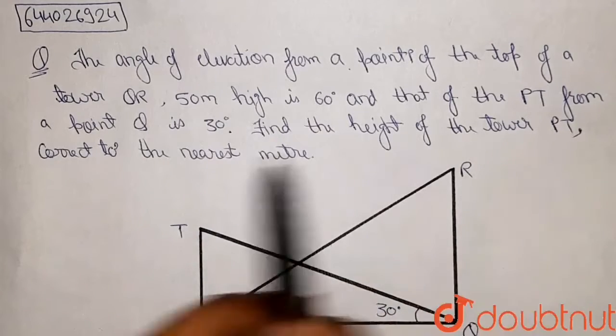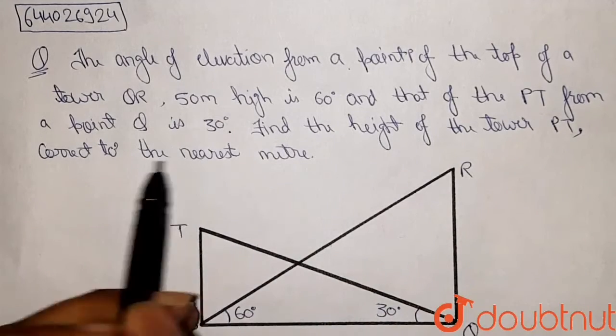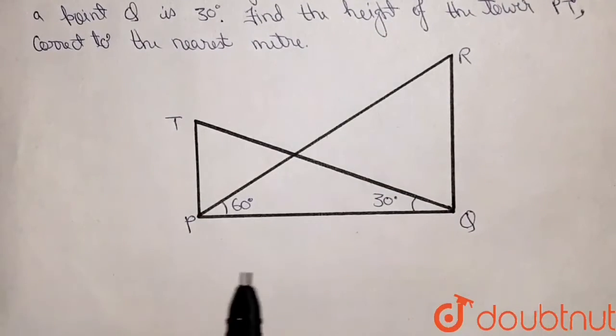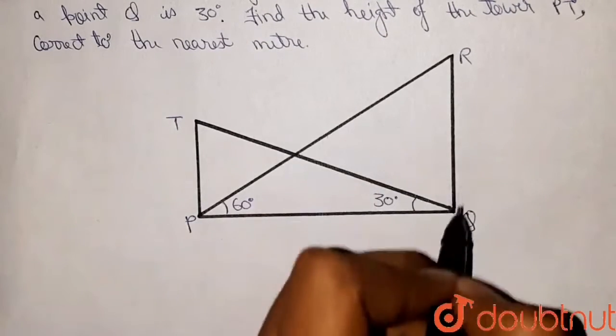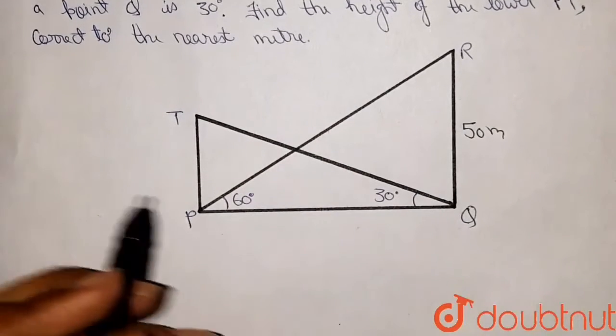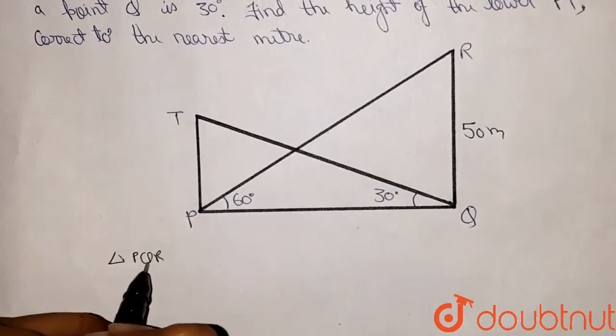Okay, so let's start. This is the given figure. From this figure, QR is given to us as 50 meters. So from this figure, in triangle PQR,